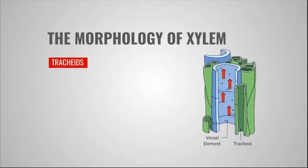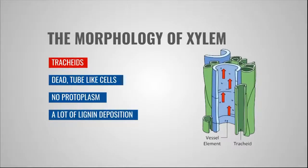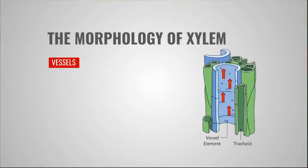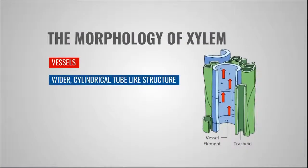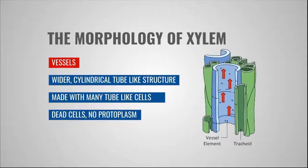Let's talk about a few here. Tracheids are tube-like long structures made up of dead cells, which means they do not contain any cytoplasm in them. A lot of lignin is also deposited on their cell walls. Vessels are comparatively wider; they have a cylindrical tube-like structure and are formed in conjunction with many tube-like cells. These cells are also dead and no cytoplasm is present here as well. Xylem also contains wood parenchyma and woody fibers to provide mechanical support to the plant.